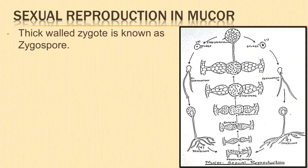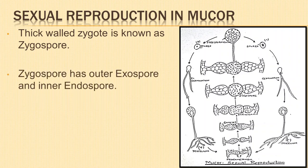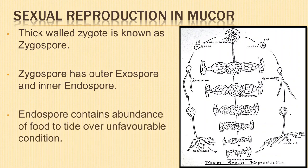The zygote with a thick wall of several layers is called a zygospore. It has an outer thick spiny exospore and a thin delicate endospore, which contains an abundance of food — particularly fat globules — to tide over the unfavourable period.